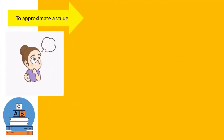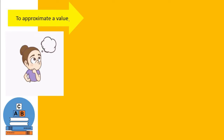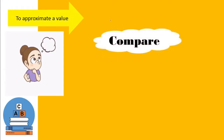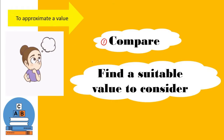We are going to learn about how to approximate a value using the binomial expansion. There are two main methods: first, we can use a comparison in order to determine the value of x, and second, we can find a suitable value to consider.